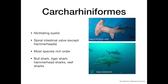Finally, the carcharhiniformes, the most species-diverse order and to many extents the most derived. Unlike lamniforms, they possess nictitating eyelids and have a spiral intestinal valve, except hammerheads. They include many well-known species such as the tiger shark, bull shark, hammerhead shark, and reef sharks.